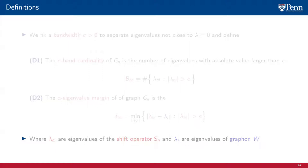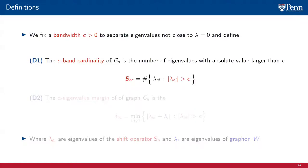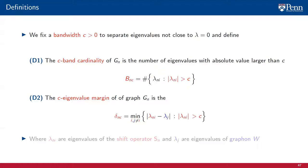We also require the same pair of definitions introduced when comparing graph filters to graphon filters. These definitions require that we fix a bandwidth C to separate eigenvalues that are close to 0 from those that are not. Associated to C, we define the C-band cardinality B_{N,C}, which counts the number of eigenvalues whose absolute value is larger than C — a number we know is finite. Also associated with C, we define the C-eigenvalue margin of the graph G_N. This margin is the smallest gap between the graph eigenvalue lambda_{N,i} and the graphon eigenvalue lambda_j with different indexes, where the graphon eigenvalue has to be in the C-band. Typically, this gap is the difference between the graphon eigenvalue immediately above C and the one immediately below C.